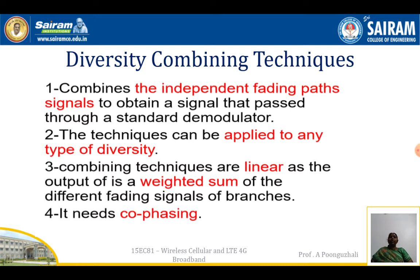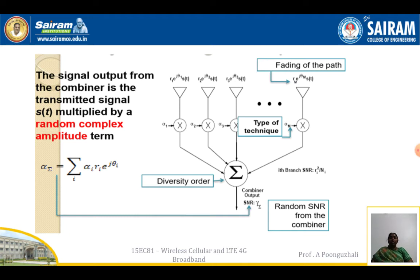The combining techniques are going to be linear, producing an output as the weighted sum of the different fading signals of the branches. Co-phasing is needed: when the signal is received there will be a slight shift in the phases of the received signal, so the phases should be combined. The different signals are R1·e^(jθ1)·s(t), R2·e^(jθ2)·s(t), and so on. Each received signal has a different amount of fading, so we multiply by weights alpha_1, alpha_2, etc.